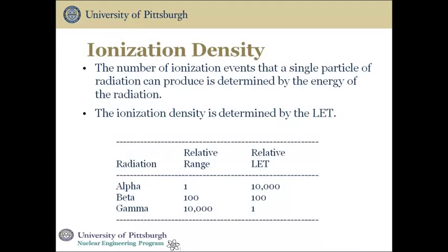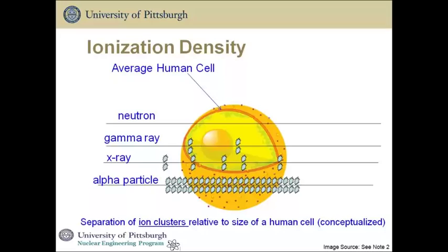Here's an illustration to show ionization density. Consider that the circle represents the size of an average human cell, enlarged so you can see what we're talking about. The horizontal lines for the different types of radiation represent the track of the radiation and the frequency with which they leave ionizations, or ion clusters. Note that the rate at which gamma rays leave ion clusters is not that great. An alpha particle — that relatively big cluster of two neutrons and two protons — has a very dense track of ion clusters as it passes through a biological target, giving up all its energy in a relatively small range of travel.